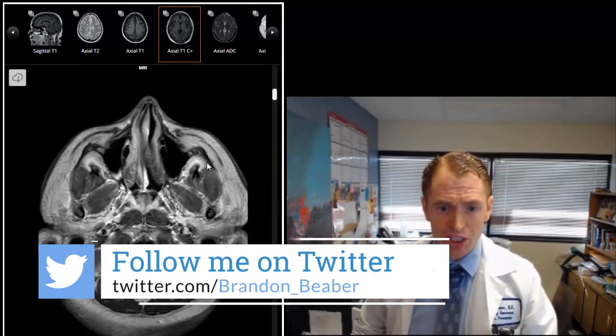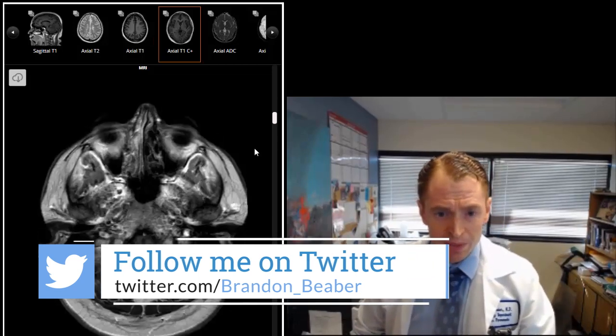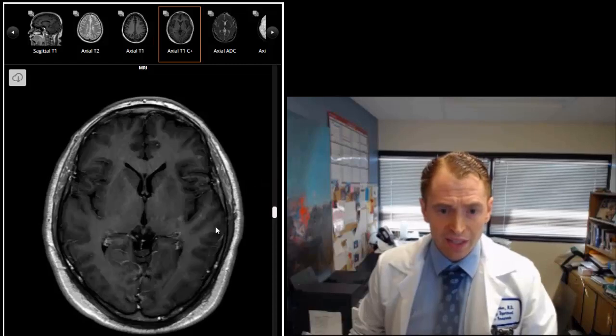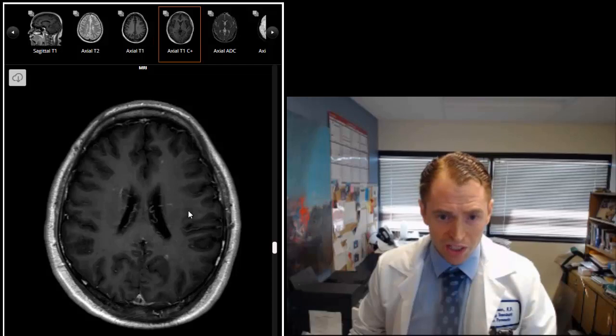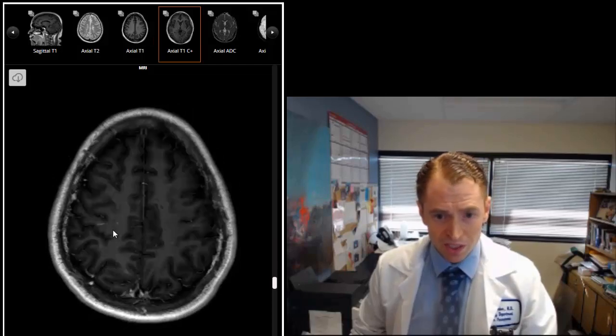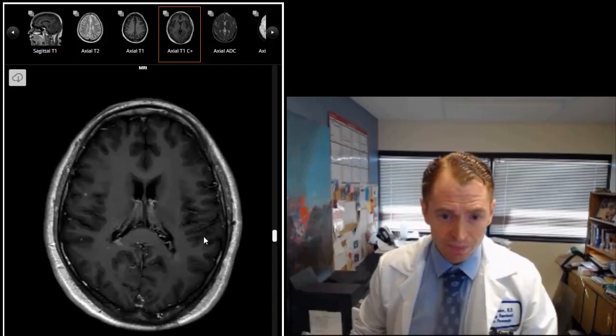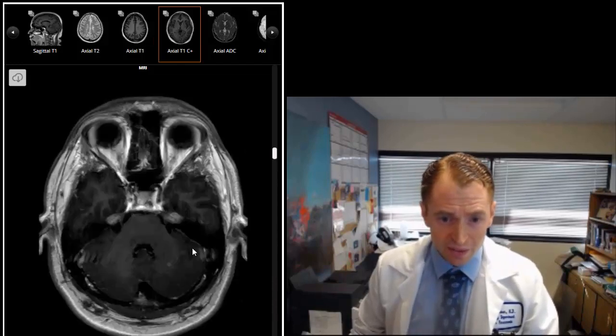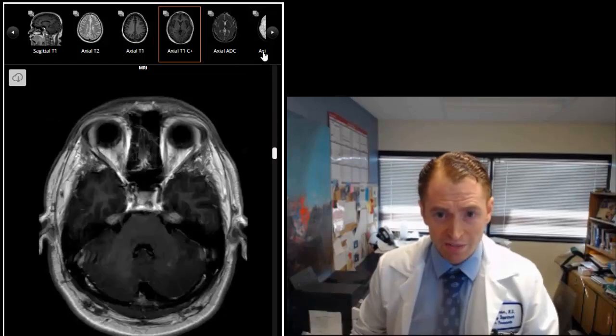Now here we can see the images with contrast. This is a T1 image with gadolinium dye. Here you can see that a lot of the lesions take up the dye. So you can see all these spots. This man has numerous contrast enhancing lesions. And you can see this one in the cerebellum for instance. So there are a lot of enhancing lesions.